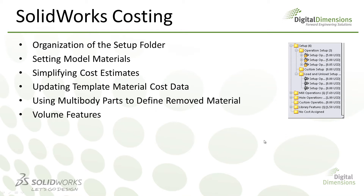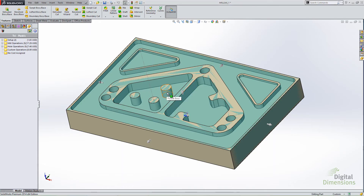Moving on to simplifying cost estimates. The way costing works in previous versions is it's based on specific features — it recognizes a hole and assigns a drill operation to it, or recognizes a pocket and assigns an end-mill operation to it. But those are very dependent on the type of tool, feeds, and speeds, so there's a lot more information that needs to be entered. The idea behind simplifying cost estimates is it allows you to generate a cost without necessarily knowing every feature or every step of the manufacturing process.